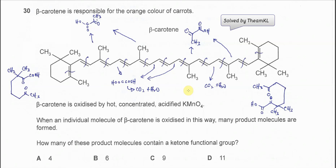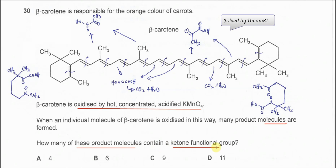Question 13. This structure is beta-carotene, and it will be oxidized by hot concentrated acidified KMnO4. We know that the C=C double bonds will break and form different products. Now, when an individual molecule of beta-carotene is oxidized in this way, many product molecules are formed. How many of these product molecules contain a ketone functional group?